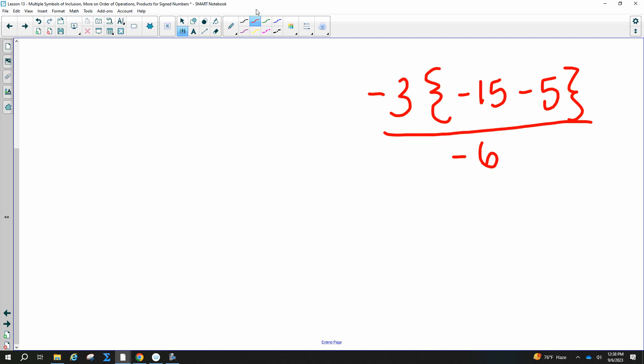Now I've got to do inside these parentheses. So I have negative 3, and you can just switch these to normal parentheses. Negative 15 minus 5. Everybody, what's that? Negative 20 divided by negative 6.